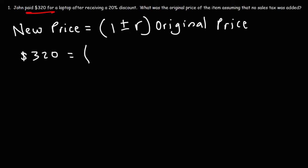So because we're dealing with a 20% discount, should we use the positive sign or the negative sign? Well, the discount is going to reduce the price. So we're going to use a negative sign. The new price is going to be less than the original price. So that's why we need to use negative R instead.